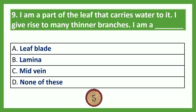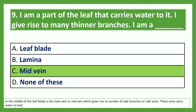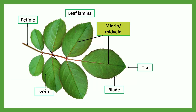I am a part of the leaf that carries water to it; I give rise to many thinner branches. I am a — Option A: leaf plate; Option B: lamina; Option C: mid vein; Option D: none of these. The answer is Option C, mid vein. In the middle of the leaf plate is the main vein or mid vein, which gives rise to a number of side branches or side veins. These veins carry water to the leaf.